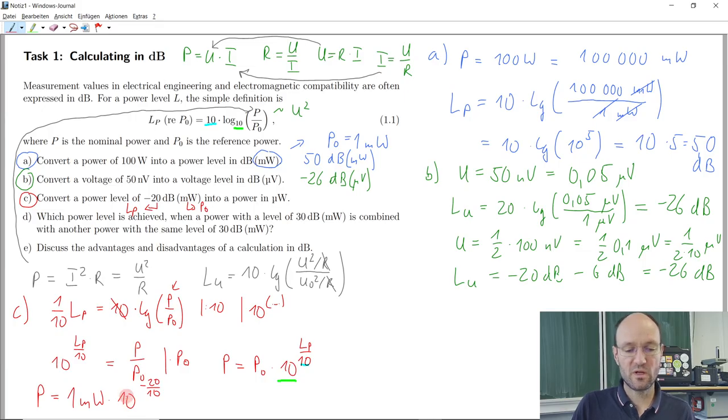And here I will directly cut or remove the dB, because once again, you can only calculate 10 to the power of a number, but not 10 to the power of a unit. But it's no problem, dB is not really a unit, so we can just cut the dB there.